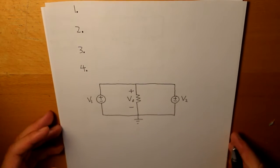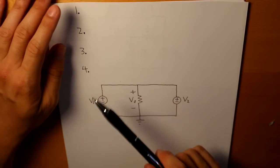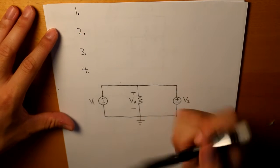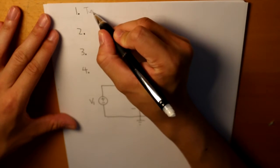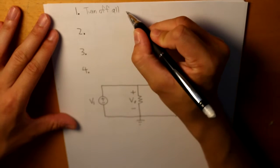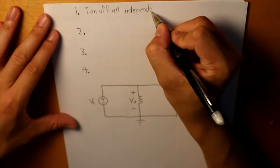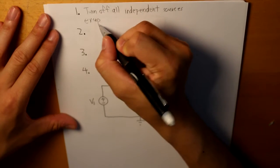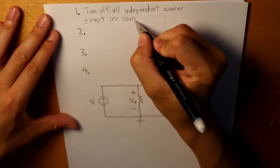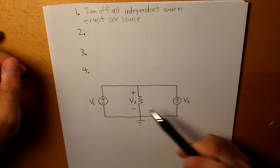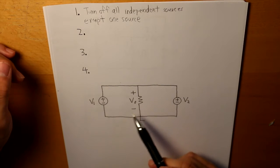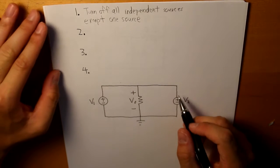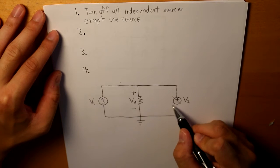In the superposition principle there's essentially a four-step process, and I'm going to use this diagram for an analysis. The first step is to turn off all independent sources except one source. In this diagram, let's say the question asks us to find what V0 is, and we turn off all independent sources except one.